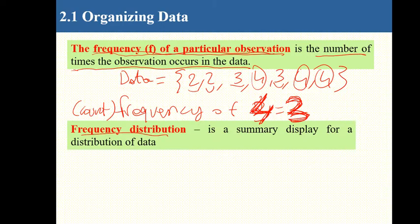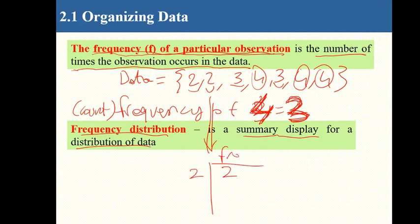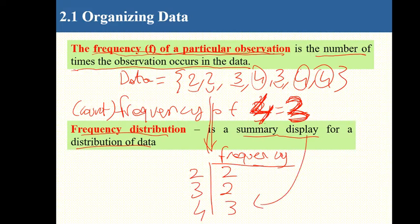A frequency distribution is a summary display for the distribution of data. So 2 is repeated a certain number of times, 3 is repeated twice, and 4 is repeated three times. This is what we call a frequency distribution.